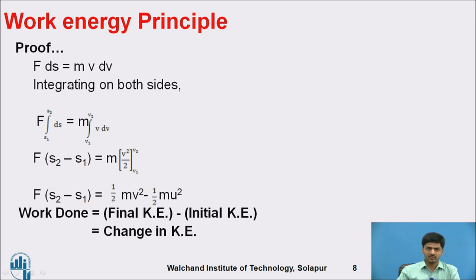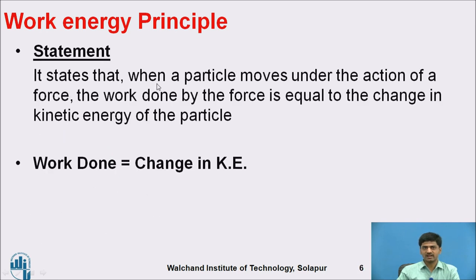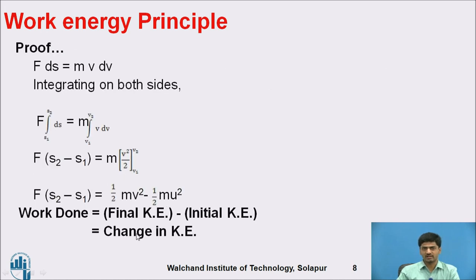These limits are very important: s1 and s2 represent displacement, and v1 and v2 represent velocity (kinetic energy). According to this statement, when a particle moves under the action of a force, the work done by the force equals the change in kinetic energy of the particle. That is, work done = change in kinetic energy = final kinetic energy − initial kinetic energy. This is the proof for the statement.